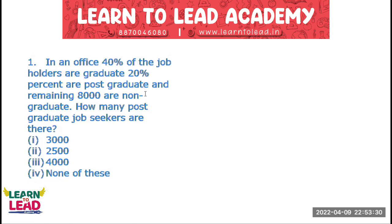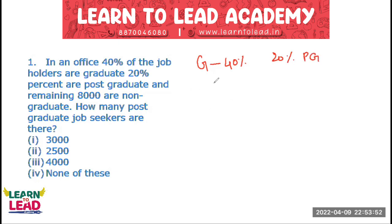The first question: In an office, 40% of the job holders are graduates, 20% are post-graduates, and the remaining 8,000 are non-graduates. How many post-graduates are there?